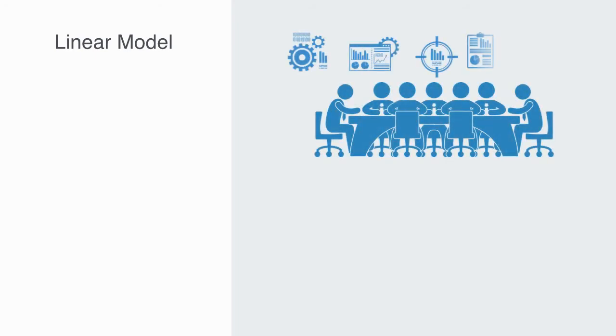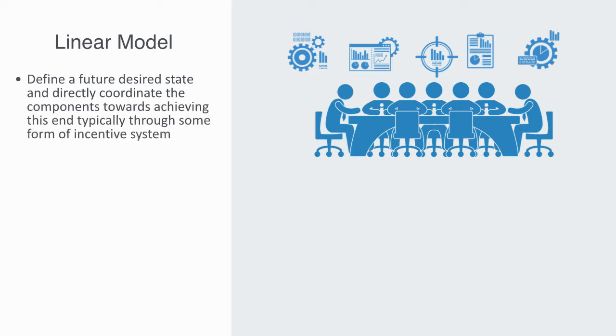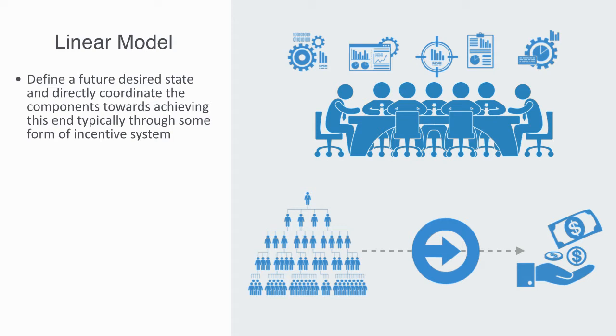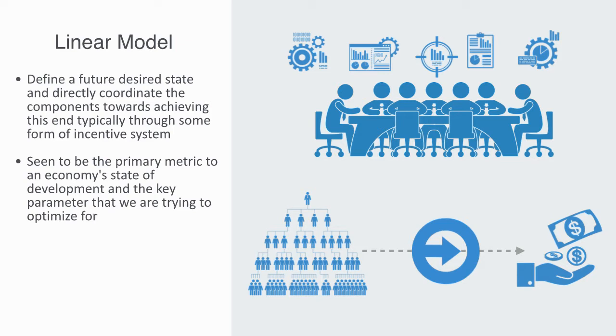Within the centrally regulated paradigm to economic development, a model of the system and its future environment is created. We define a future desired state and directly coordinate the components within the system towards achieving this end, typically through some set of incentive systems. The aim is to maximize throughput within a macro economy. This gross throughput is captured by the metric of gross domestic product, which is seen to be the primary metric to an economy's state of development and the key parameter that we're trying to optimize for.